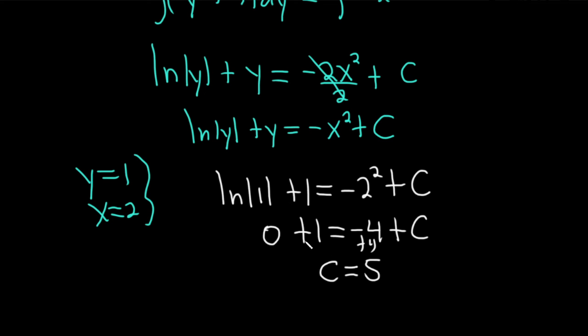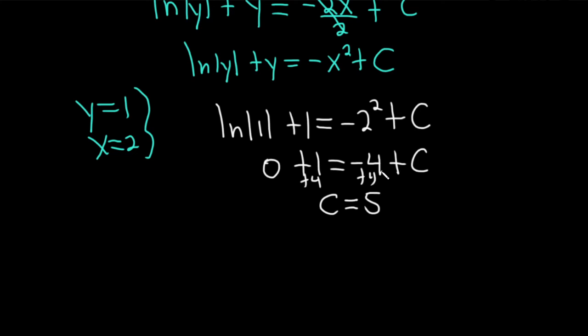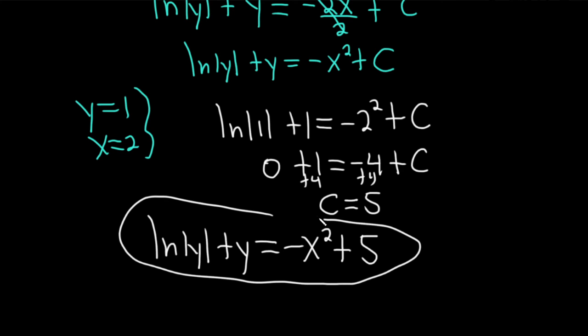So now we're going to go back here and replace c with 5. So this is going to be ln absolute value of y plus y equals negative x squared plus 5. And that would be the solution to this problem.